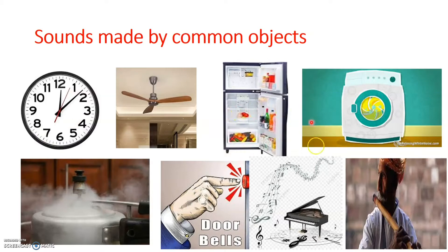Different objects make different sounds. Every day, we listen in our home to the sounds of objects like a clock, a fan, refrigerator, washing machine, a pressure cooker, a bell ringing at the door, sound of a piano, and sound of some other musical instruments like flute. Some of these objects produce very loud sounds and we can hear them from a distance, but there are some other objects like a clock, whose sounds we may not hear unless we are very close.